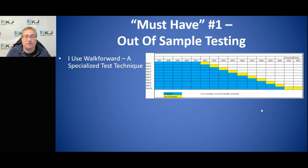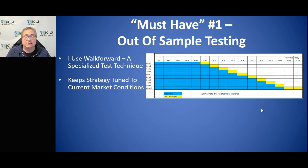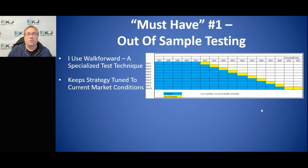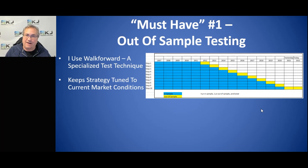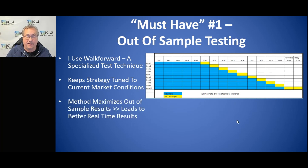I use what's called walk forward testing. It's a technique that keeps the strategy tuned to market conditions, and it also gives you a lot of out-of-sample data results. You want out-of-sample results — those are more realistic going forward than an in-sample optimized test. The walk forward test gives you all the yellow areas shown, and that's out-of-sample data. That's what you really want.